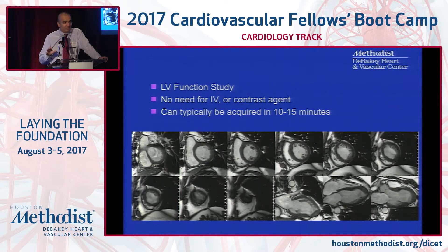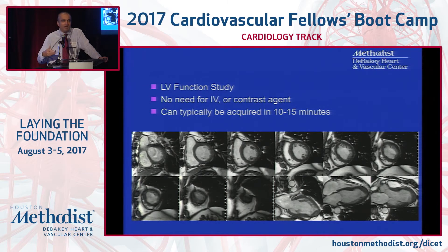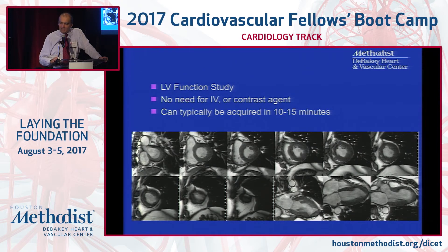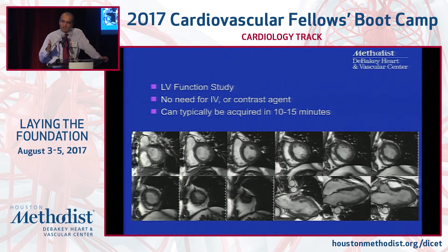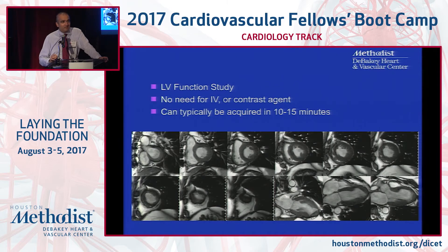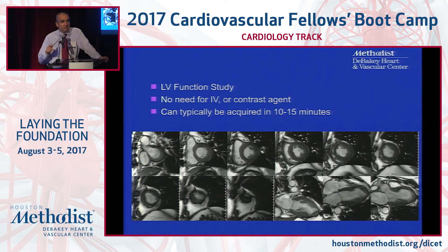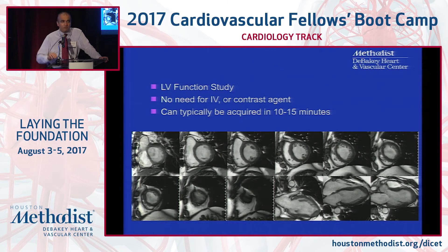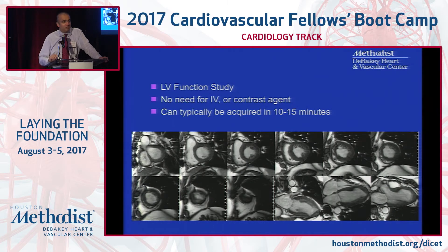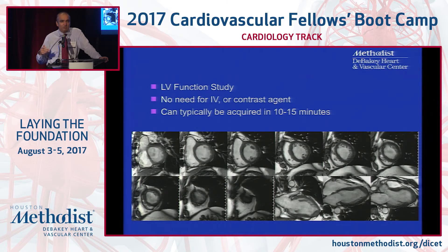Another advantage of CMR is that we can pick the exact imaging planes that we want. We're not limited by acoustic windows, body habitus, ribs, or anything like that. What we'll do is pick a series of short axis slices from the base of the heart to the very apex, typically done every 10 millimeters apart, giving complete coverage of the entire myocardium. We'll also do the standard long axis views — the two chamber, three chamber, and four chamber views. This entire study can be done in about 10 to 15 minutes.